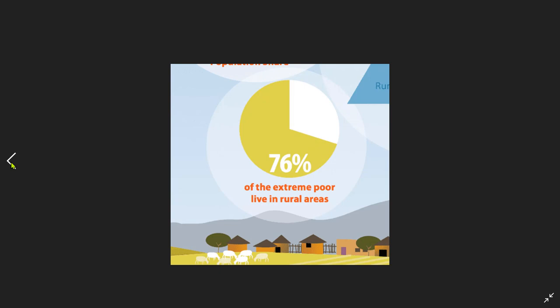Here's another example of getting an infographic wrong. It states that 76% of the extreme poor live in rural areas. But if you look at that infographic, that is not 76% — it doesn't matter which way you cut that pie, that is not 76%. So if you're going to use pie charts or donuts, make sure they are actually representative of the values you're trying to put forward. They don't have to be precise, but they have to be pretty close. Make sure you pick the right icons to impart the message you're trying to get across.